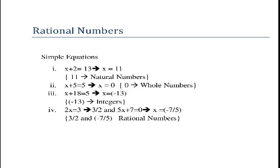Now consider another set of equations. 2x equal to 3 — here the value of x equals 3 by 2. And 5x plus 7 equal to 0 — here the value of x equals minus 7 by 5. These values 3 by 2 and minus 7 by 5 are rational numbers.